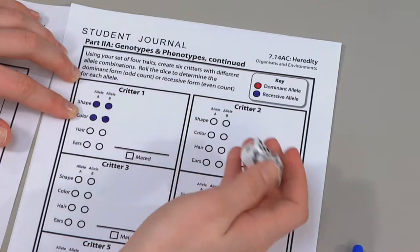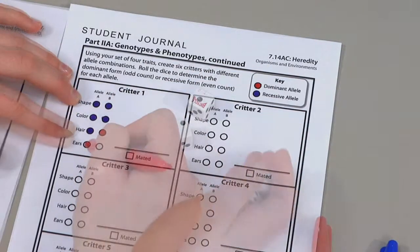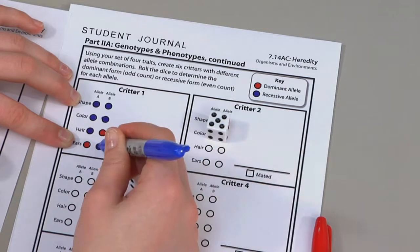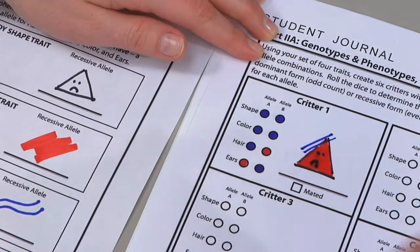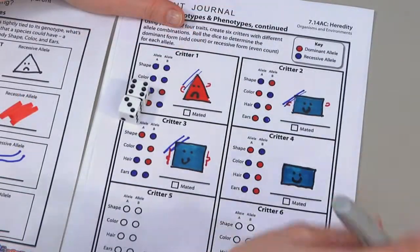Use the key to fill in the circles with the appropriate colors based on dominant odd and recessive even counts. Draw the phenotype of each critter in the space provided on the student journal.